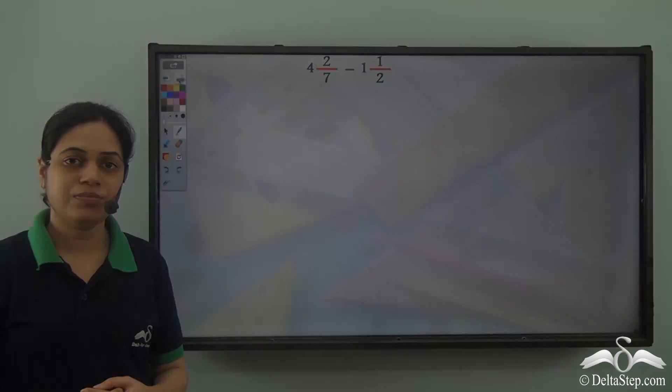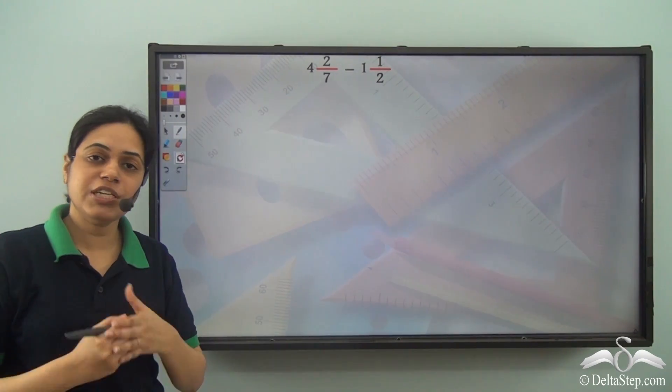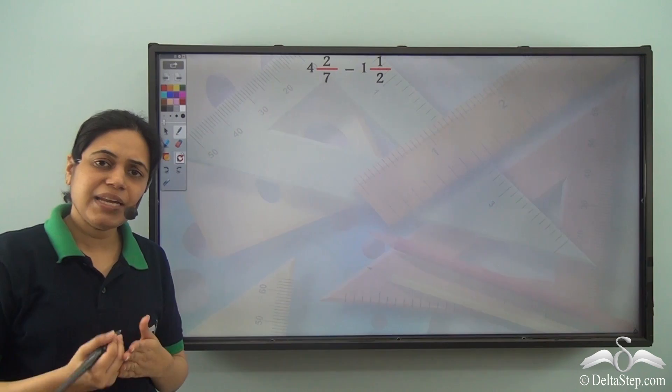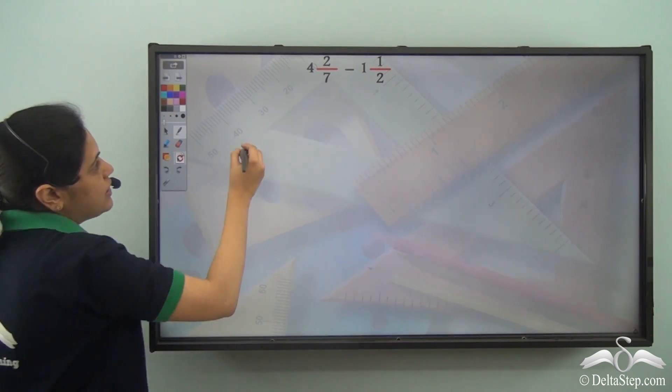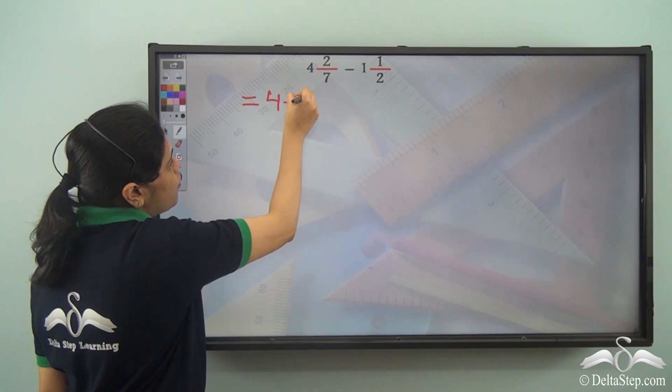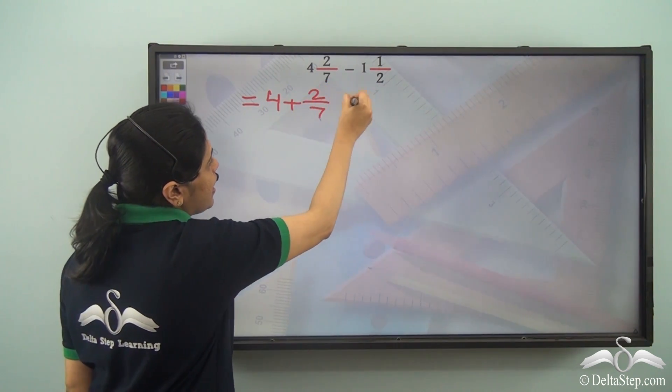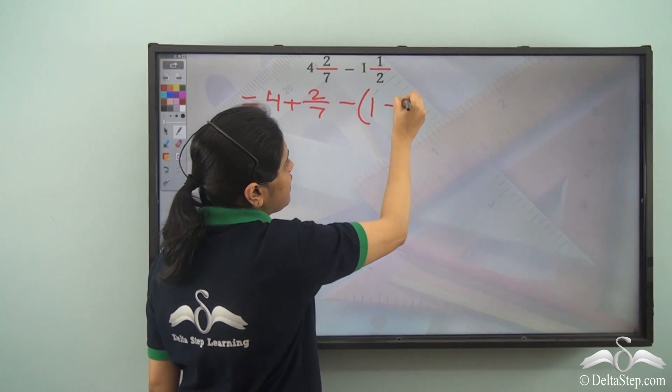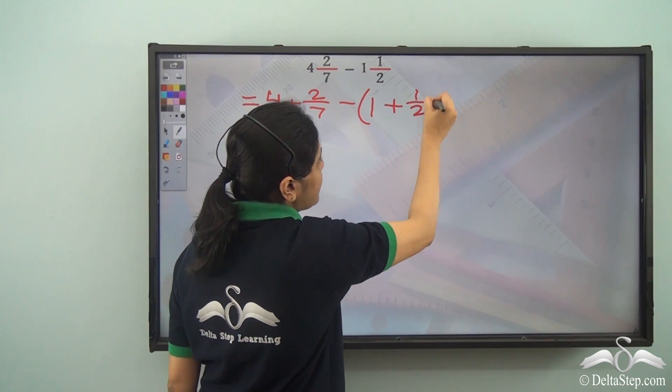Now can you subtract these two? Instead of subtracting them by converting to improper fractions, I can break it into two parts. That is, 4 2 by 7 can be written as 4 plus 2 by 7 and 1 1 by 2 can be written as 1 plus 1 by 2.